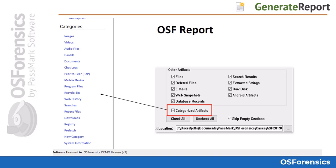As you review your options in the report generator, you will see one labeled Categorized Artifacts. If checked, it will include a section in the report dedicated to the categories that you assigned to files and results. If you utilize the categories feature, this is a great way to categorize your case evidence for quick review in the report. However, if you do not utilize the categories feature when adding evidence to your case, you will probably want to exclude this section by unchecking this box before generating your report.